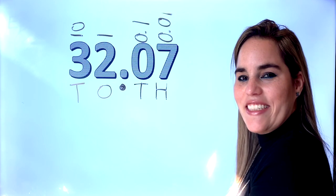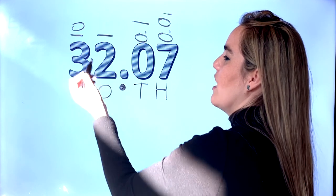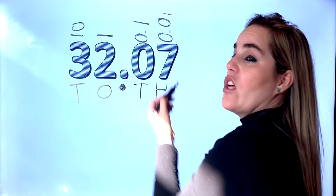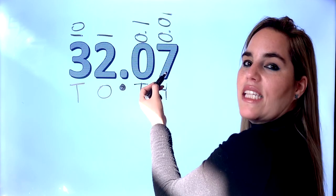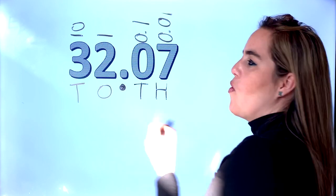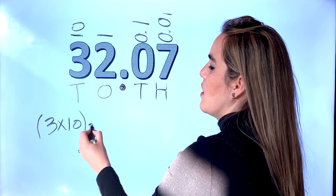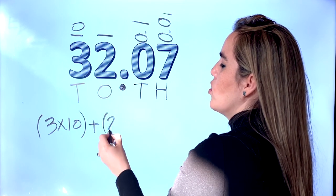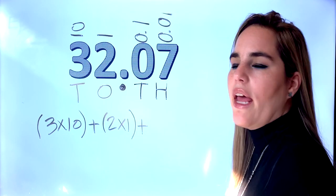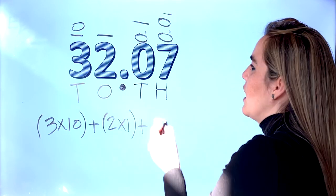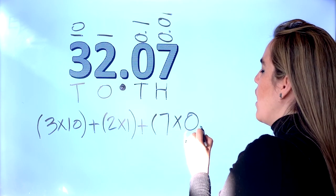Is it getting easier? Now let's do the expanded notation. Three groups of ten, two groups of one, zero groups of zero-point-one — which means zero, so we don't write anything — and seven groups of zero-point-zero-one. So we have three times ten, plus two times one, plus zero (you can skip it or write zero), plus seven groups of one-hundredth.